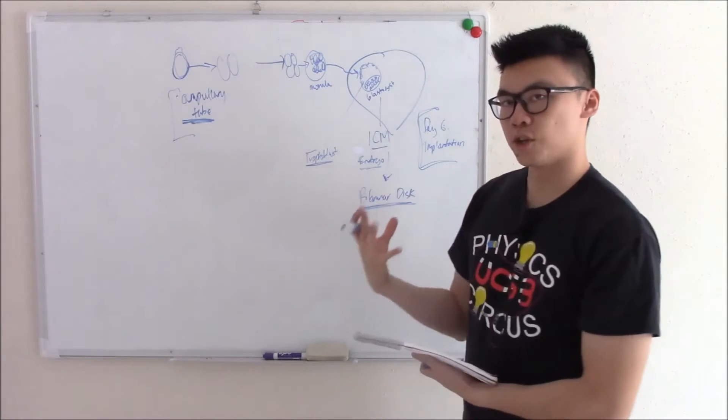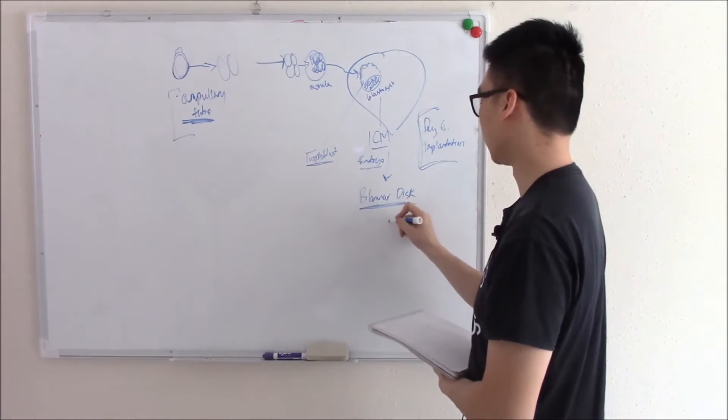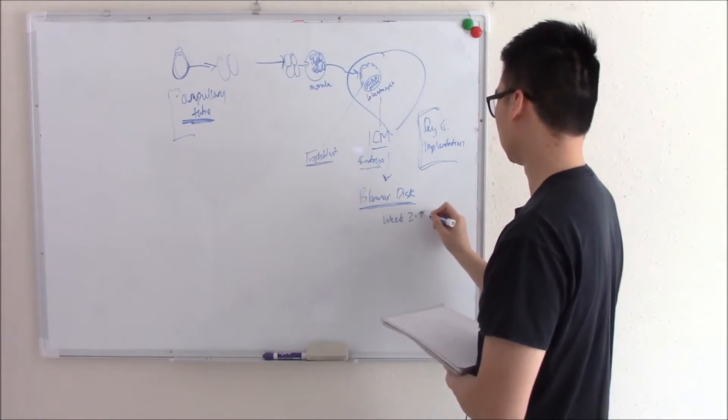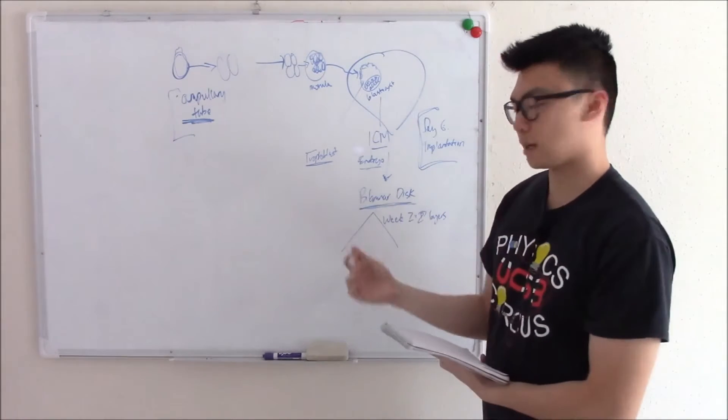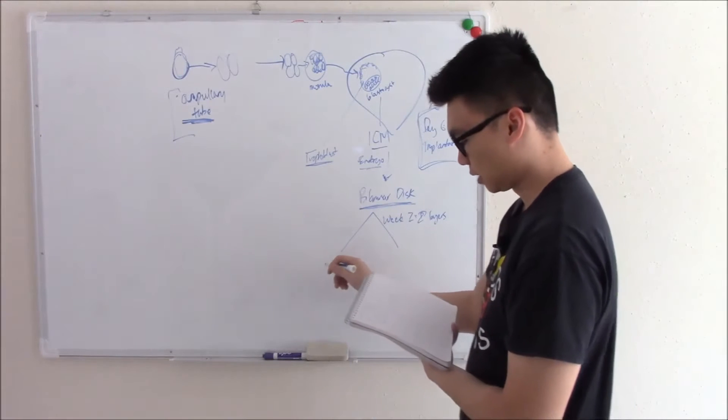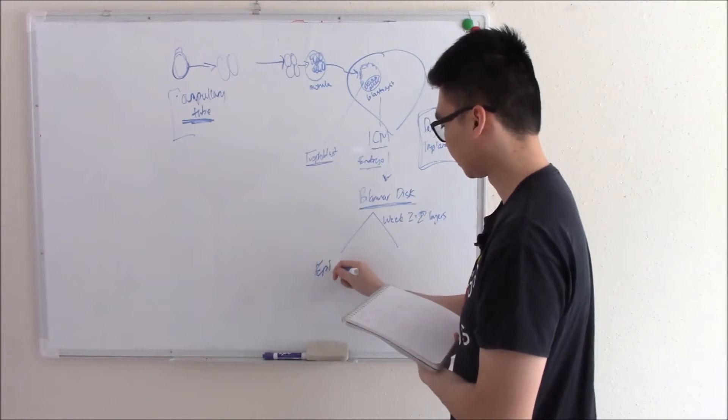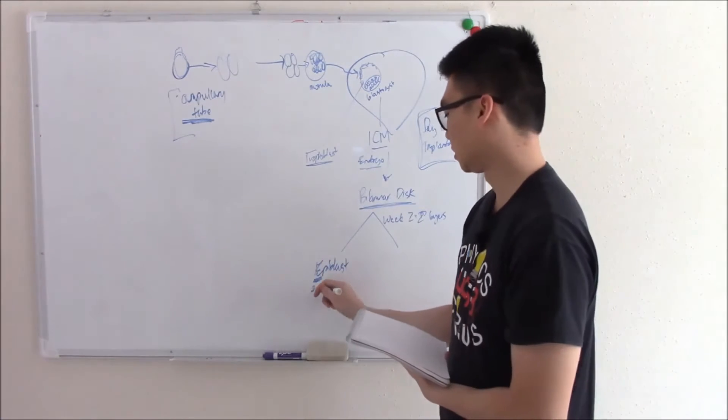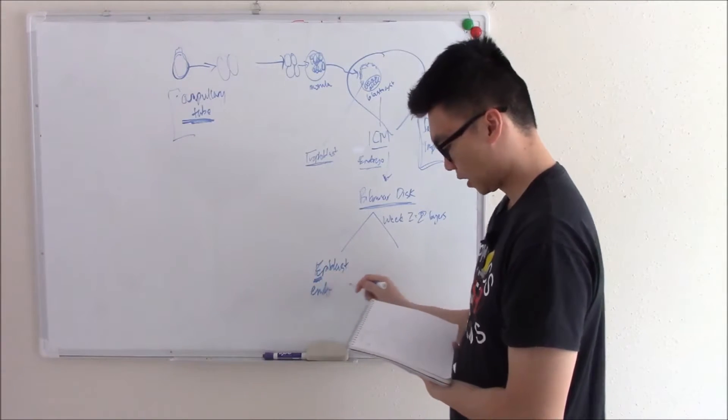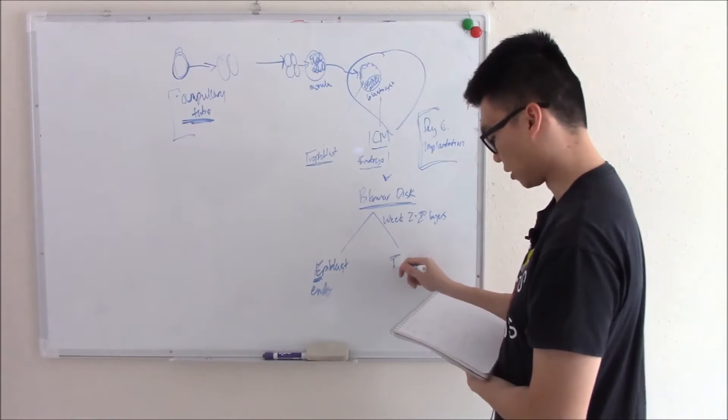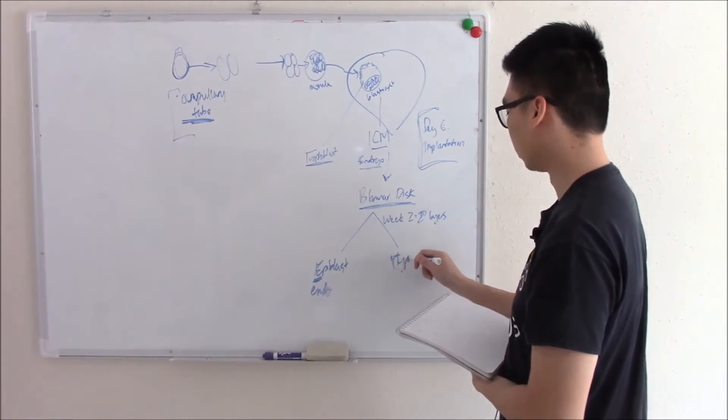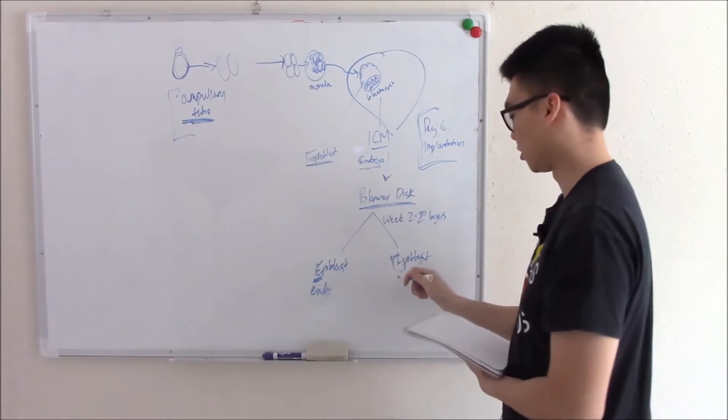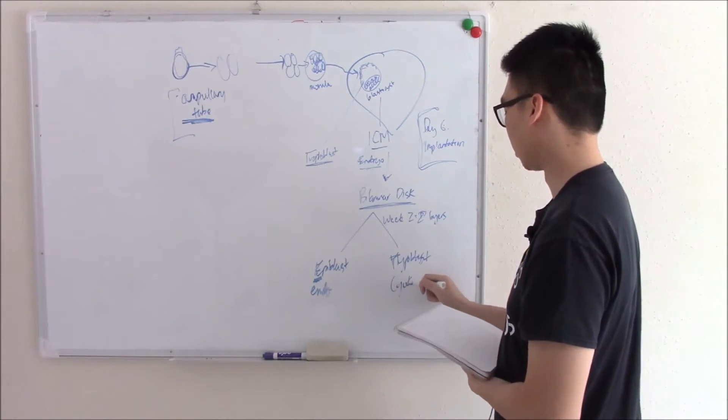It's turned itself into two sheets of cells. You can think of it as week two, two layers. And those two layers of cells, one of them is called the epiblast. That will become your embryo. E for epi, E for embryo. And the second layer is called your hypoblast, which makes things to support your embryo like your yolk sac.